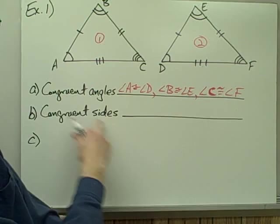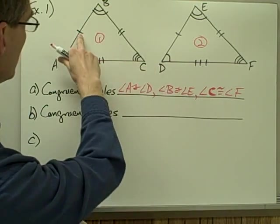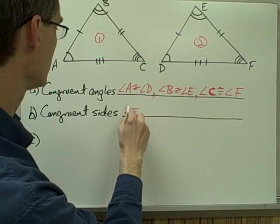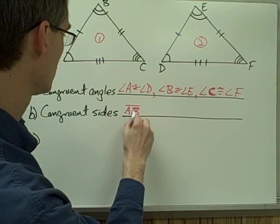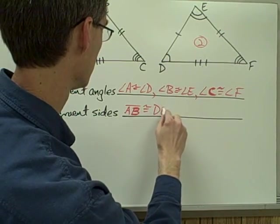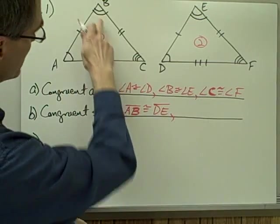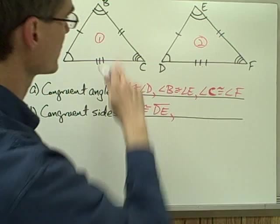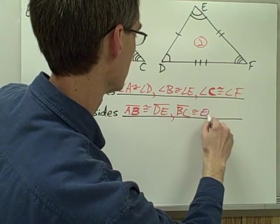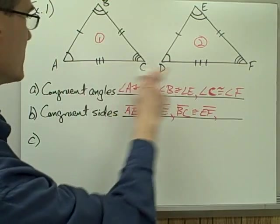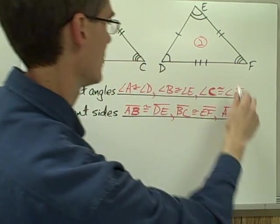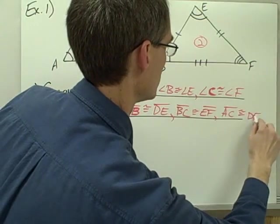Now I want to look for my pairs of congruent sides. I've got side AB with a single hash mark and side DE with a single hash mark, so those two sides are congruent — segment AB is congruent to segment DE. Segment BC has the double hash mark, segment EF has the double hash mark, so BC is congruent to segment EF. And segment AC and DF are congruent — segment AC is congruent to segment DF.